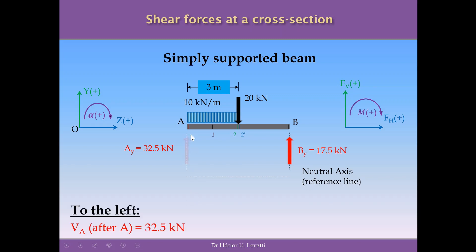If we run the calculations to the left of cross-section A — the cross-section shown in red in the figure — and considering that we are located exactly after reaction A, the summation of shear forces to the left is only the reaction A. The value of this reaction is 32.5 kN, positive because it's going up. We can sketch this value in the diagram above the reference line, adding 32.5 kN.